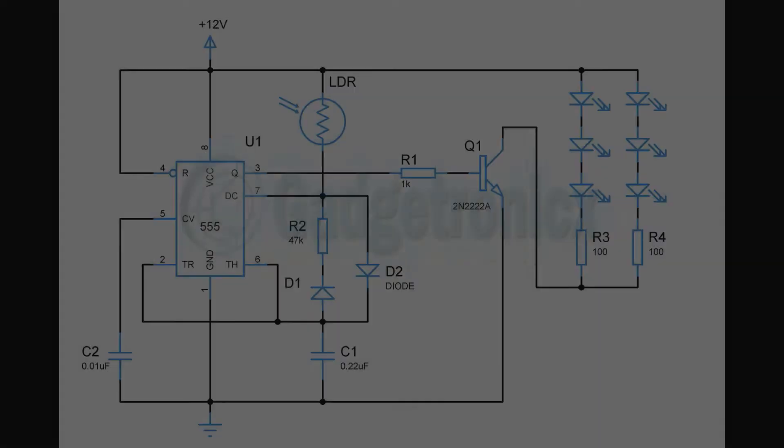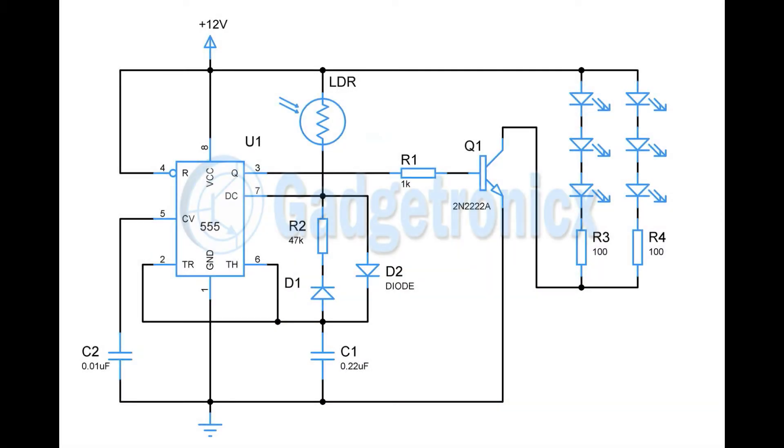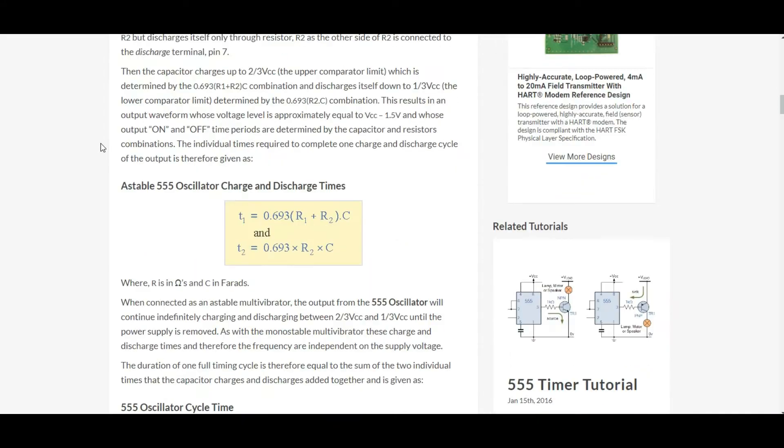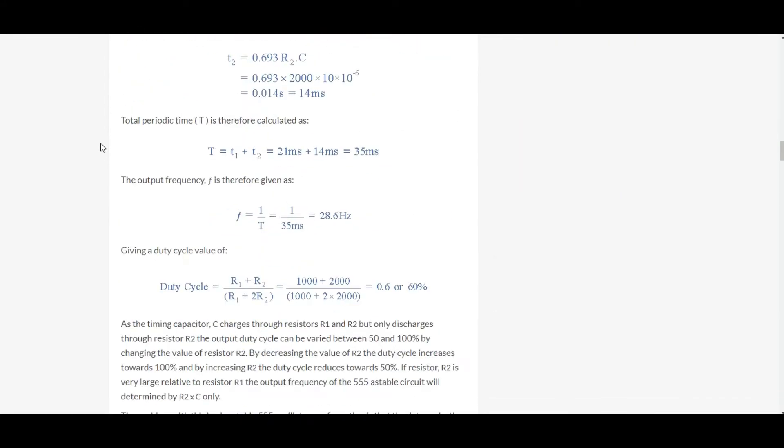Now add a transistor and bunch of LEDs as per your need and your circuit will be finally ready. If you feel lost, follow the link in the description where you can know more about using 555 timer as an oscillator.